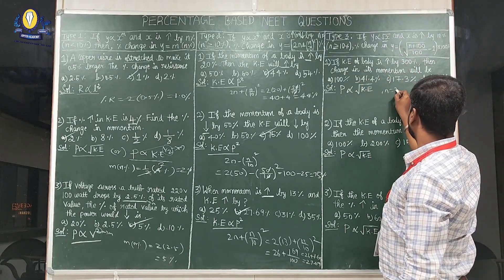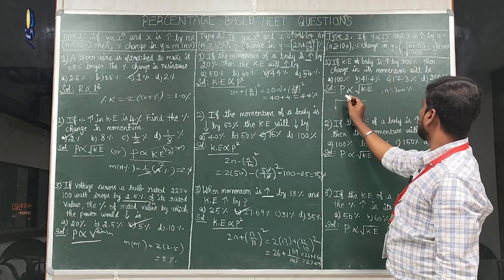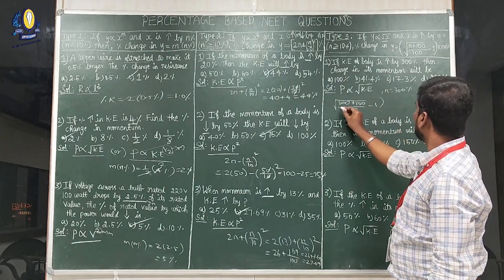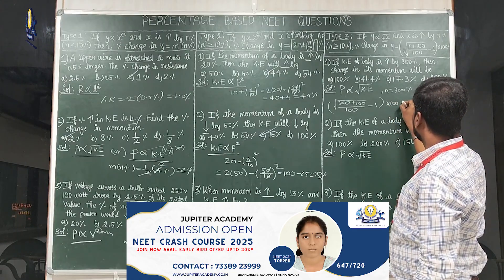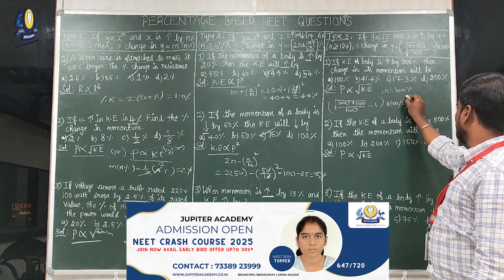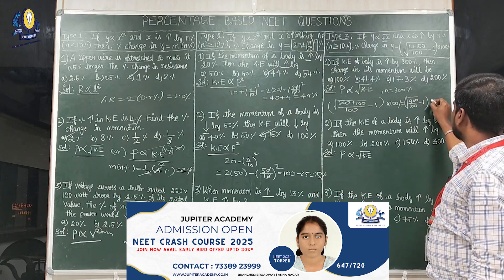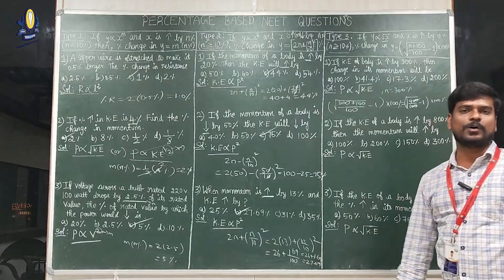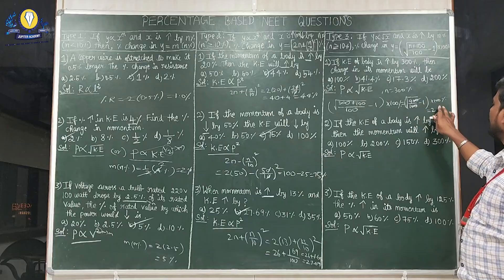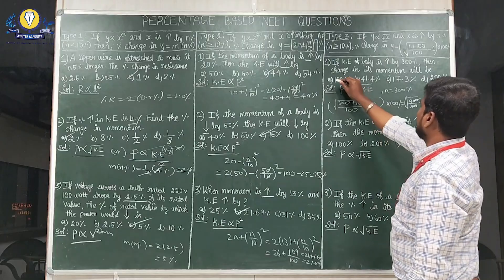Using the formula with n = 300: [√((300+100)/100) − 1] × 100% = [√(400/100) − 1] × 100% = [√4 − 1] × 100% = [2 − 1] × 100% = 100%. So the answer is 100%.